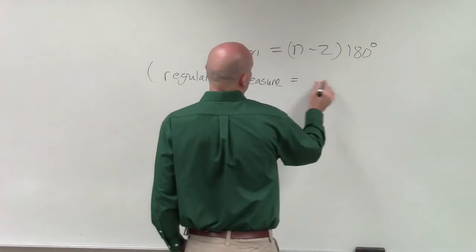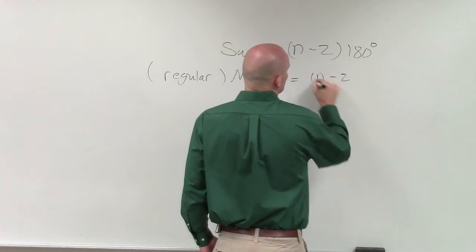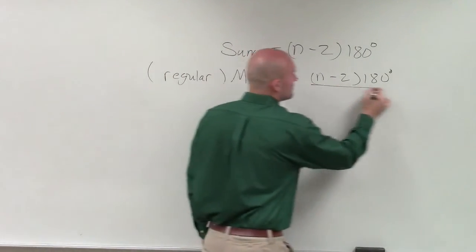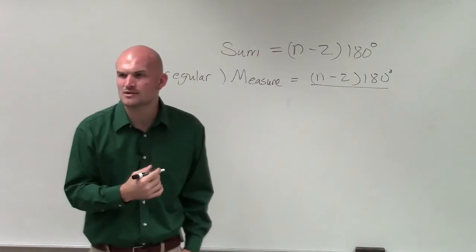Then what we're simply going to do is take n minus 2 times 180. And then, what do we divide it by? In those last problems, what do we divide it by?